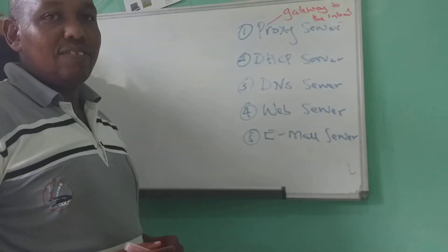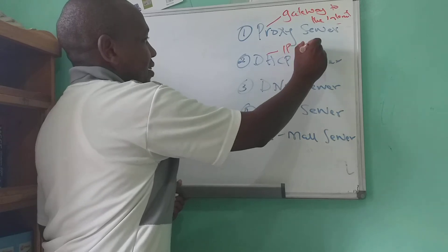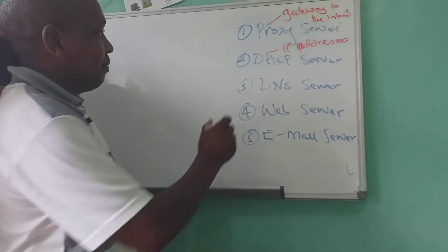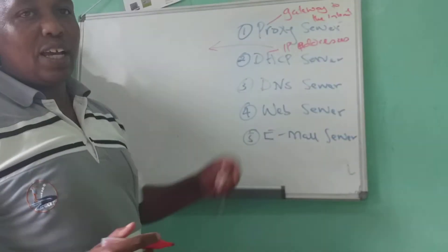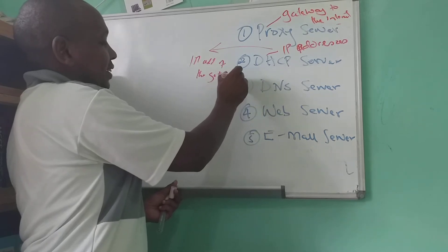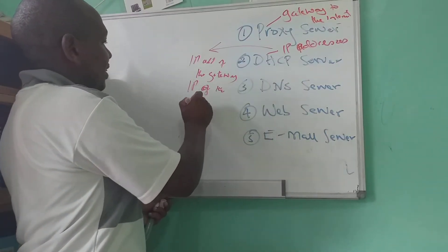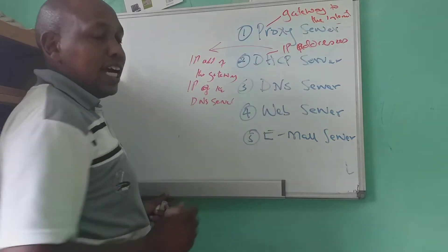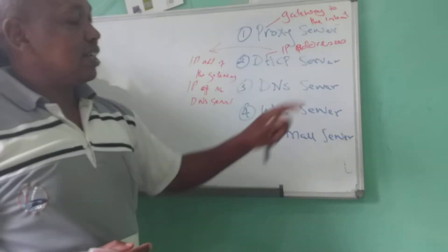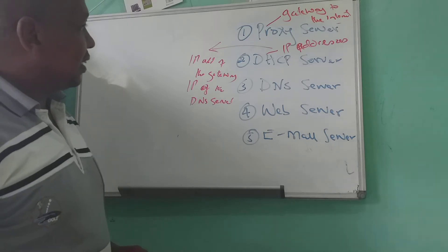DHCP, which stands for Dynamic Host Configuration Protocol, is a server that assigns IP addresses and other parameters that computers in the local area network require to connect to the internet. These parameters include the IP address of the gateway (the proxy server) and the IP address of the DNS server. The DHCP server distributes these parameters to computers in the LAN so they can access the network.